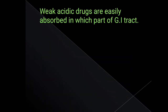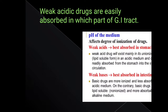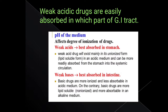Weak acid drugs are best absorbed in the stomach, whereas weak bases are best absorbed in the intestine. The reason is that weak acid drugs exist mainly in their unionized, lipid-soluble form in an acidic medium and can be more readily absorbed into systemic circulation. Weak bases are more lipid-soluble — i.e., non-ionized — and more absorbable in an alkaline medium. You should know the difference between lipid-soluble non-ionized and ionized forms.